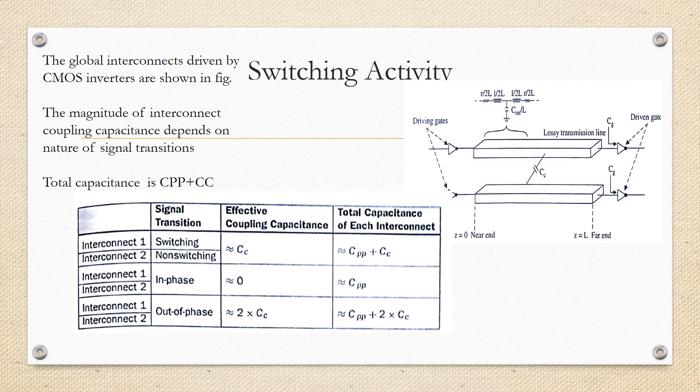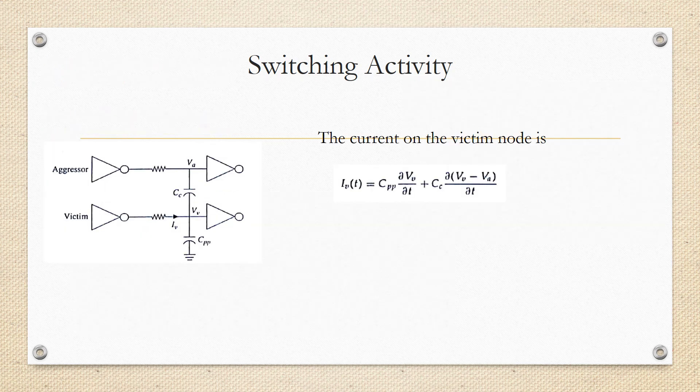As a result, the current which is flowing to the victim node is given by the expression like this. You can see here it can be modeled like this, and the current flow Ivt is given as Cpp·dV/dt + Cc·d(Vv - Va)/dt. Here Va and Vv is the potential difference across capacitance Cc. So that much extra current charging current is flowing for this capacitance Cpp. So this is your crosstalk noise.